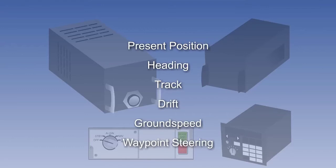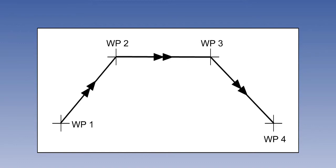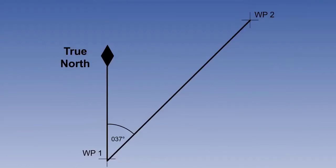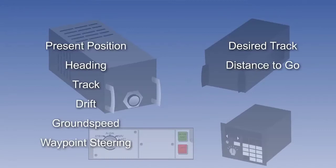The INS also gives waypoint steering. This is the facility to enter a route as a series of latitudes and longitudes, and then have a steering signal generated to be displayed on the flight director system and fed to the autopilot. With waypoint steering, the INS will display the desired track between any two waypoints. For instance, the desired track between waypoint 1 and waypoint 2 in this example is 037 degrees true. It also calculates distance to go to the next waypoint and time to go.